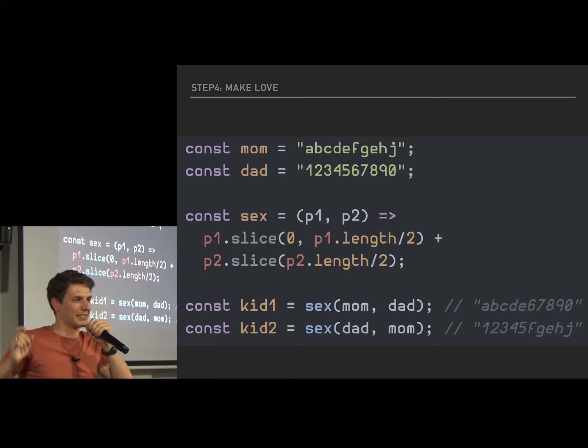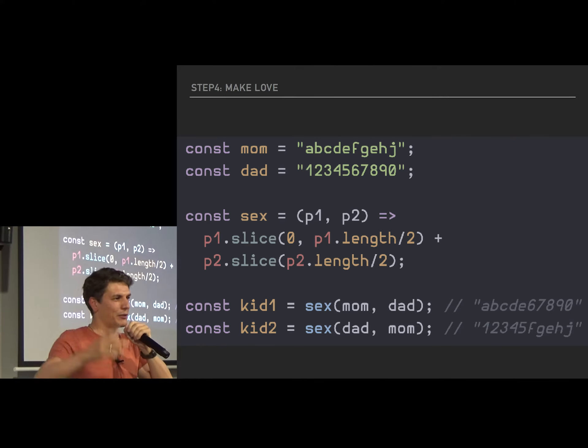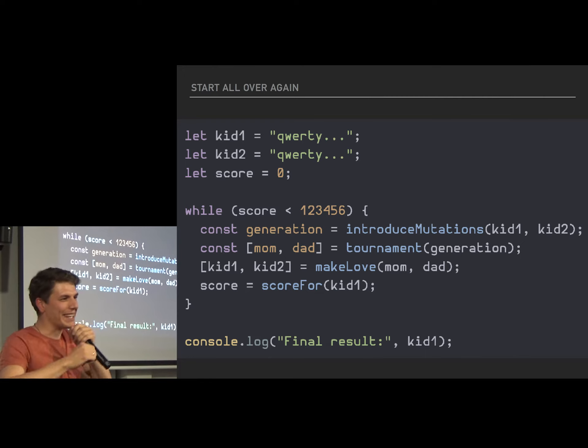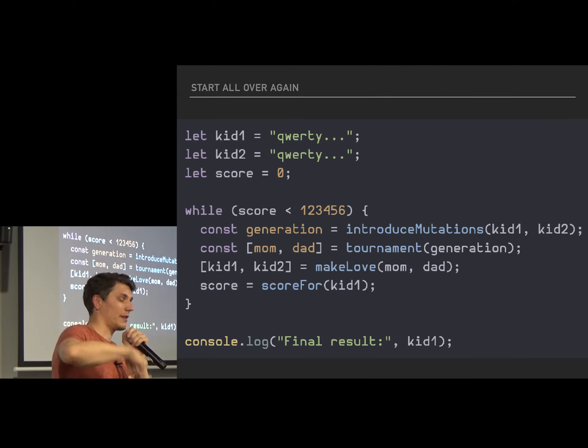And the final step you need to love. Basically, say you have two solutions. You pick two winners, mom and dad. And you need to cross over those two to produce two offspring. I named it kid one, kid two. Great boyfriend material. Then you need to do it all over again. There is a loop. Basically, you pick the score you want, how good quality solution you want. Then you pick two solutions, mutate them, create a generation, pick two best, well two winners, make love, start again. You do it all over again until you're satisfied with how good a solution you need.